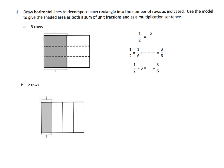It says to draw horizontal lines to decompose each rectangle. Here we see that we've got a half indicated right here. We can see that we've cut it into three rows using two slices. Parents and teachers, don't let this three rows cause your students to make three slices — we want three rows, which requires two slices.